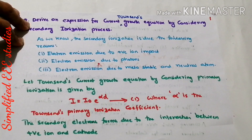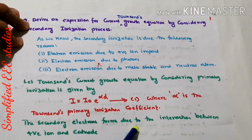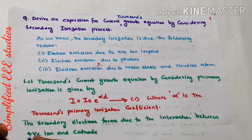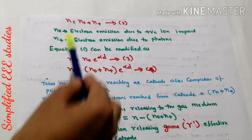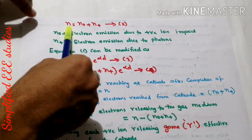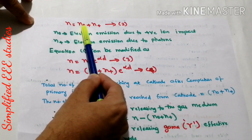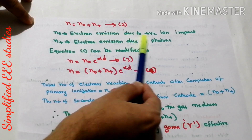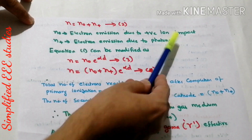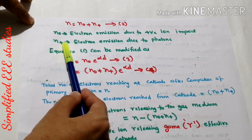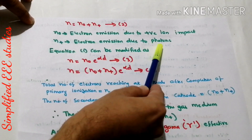Now let us consider the condition for secondary electron formation and the secondary ionization process. The secondary electrons form due to the interaction between positive ions and the cathode — that is why secondary electrons will be formulated. The total number of secondary electrons N can be written as N₀ plus N⁺, where N₀ is the electron emission due to positive ion impact.